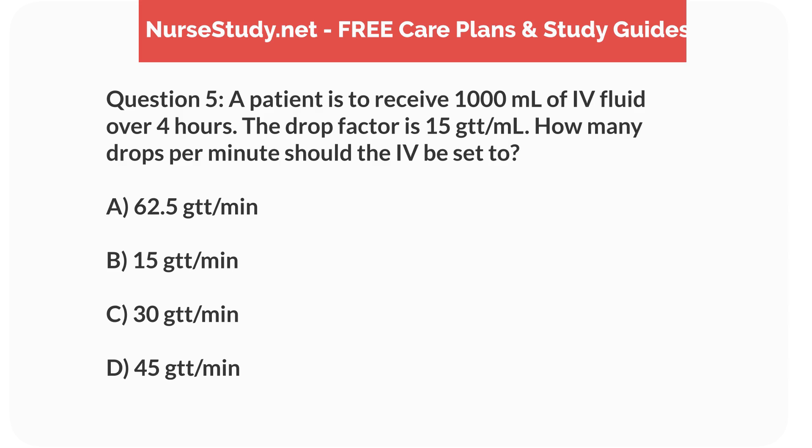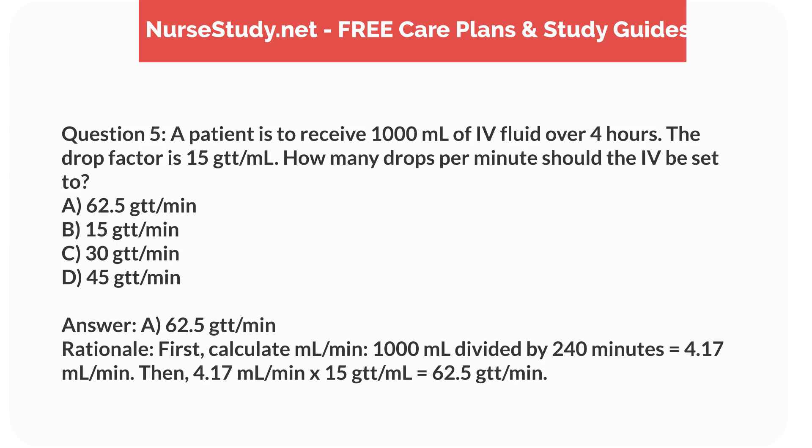Question 5. A patient is to receive 1,000mL of IV fluid over 4 hours. The drop factor is 15 drops per mL. How many drops per minute should the IV be set to? a. 62.5 drops per minute, b. 15 drops per minute, c. 30 drops per minute, d. 45 drops per minute. Answer: a. 62.5 drops per minute. Rationale: First, calculate mL per minute: 1,000mL divided by 240 minutes equals 4.17mL per minute. Then, 4.17mL per minute times 15 drops per mL equals 62.5 drops per minute.